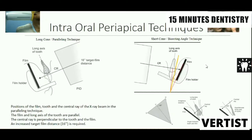In the bisecting angle technique, the film is held by the patient's finger. You can also use a holder, but that is very uncomfortable. The long axis of the tooth and the long axis of the film form a bisector, and the central ray is directed perpendicular to this bisector to get a proper image.